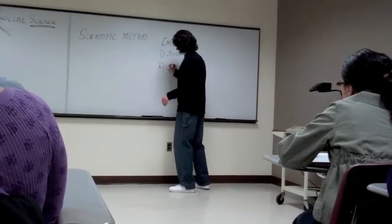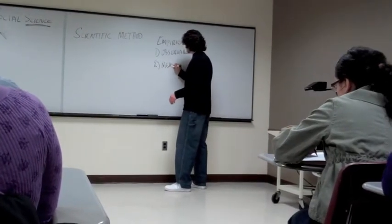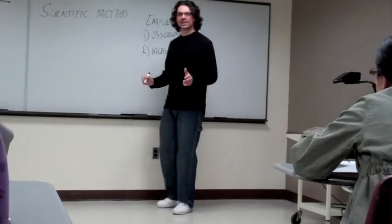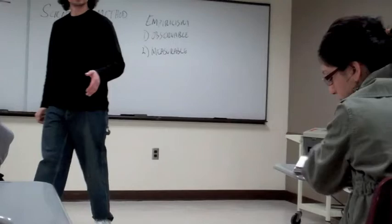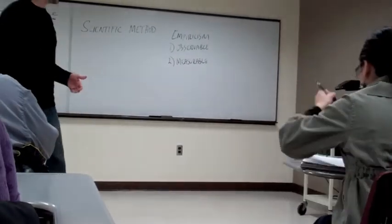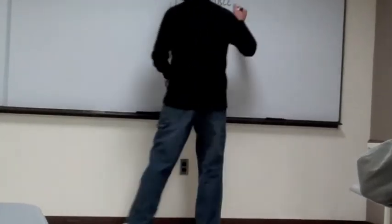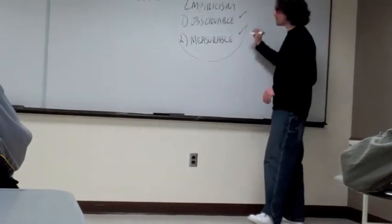And the other thing it has to be is measurable. You have to be able to say it weighs this much, it is this length, it is this volume, it is this temperature. So we have two rules of science that are empirical rules: it has to be observable and it has to be measurable.